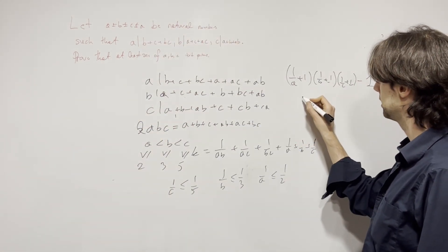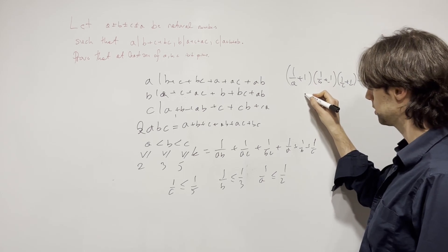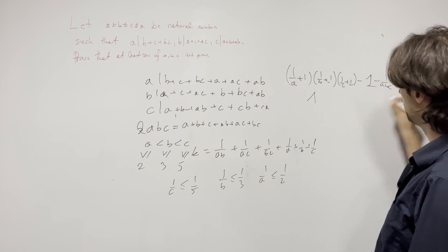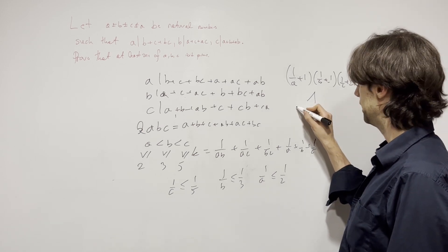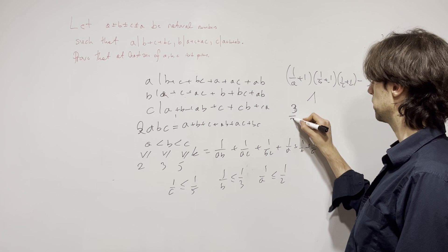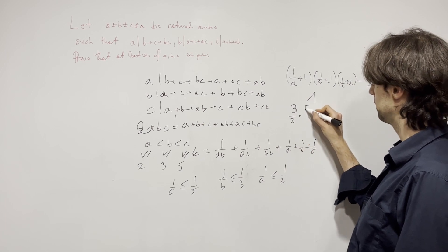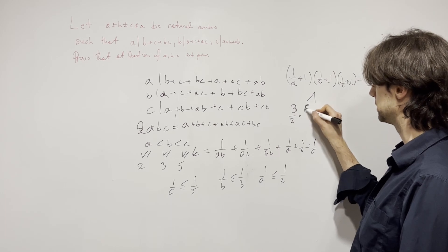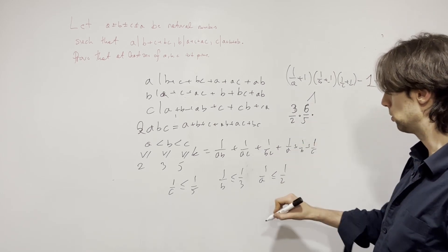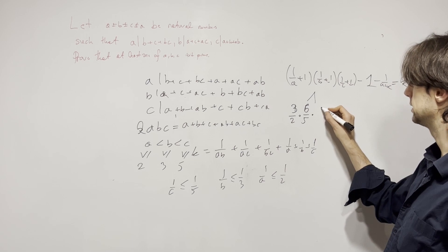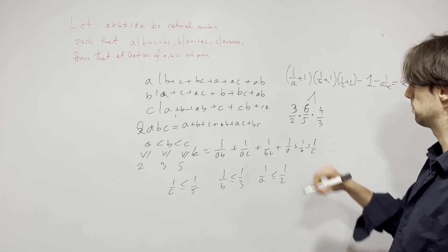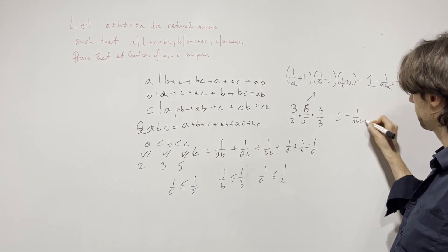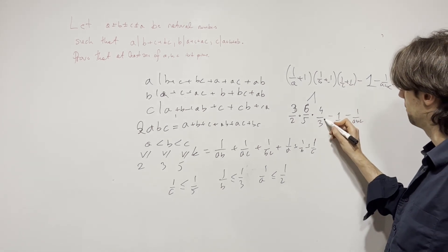And this is going to be less than a half plus 1, which is 3 over 2, times, so 1 over 5, which is 6 over 5, plus 1 over 3, which is 4 over 3, minus 1, minus 1 over ABC.